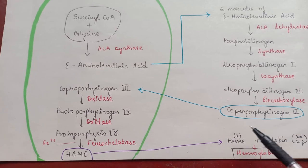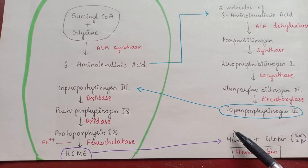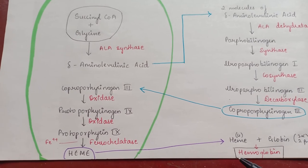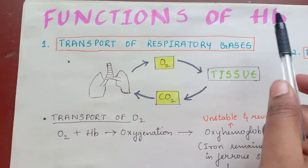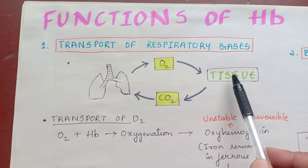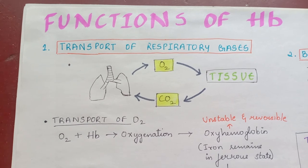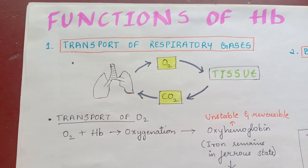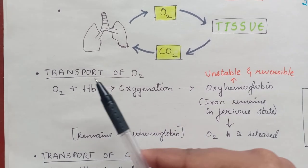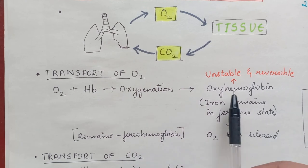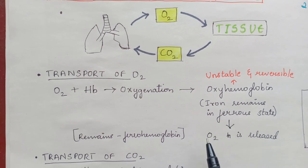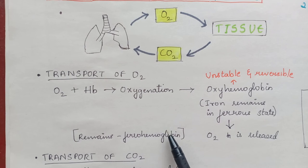Four molecules of heme combine with globin, which has alpha and beta chains, to form hemoglobin. Functions of hemoglobin: transport of respiratory gases — oxygen is transported to tissues and carbon dioxide to the lungs by hemoglobin. When oxygen binds with hemoglobin, a physical process called oxygenation occurs, resulting in the formation of oxyhemoglobin, which is unstable and reversible. Iron remains in the ferrous state and oxygen is released.